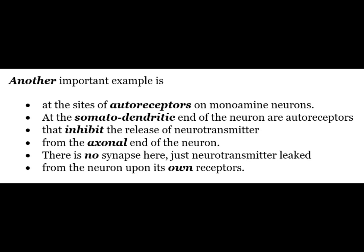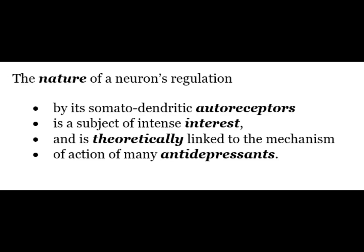Another important example is at the sites of autoreceptors on monoamine neurons. At the somatodendritic end of the neuron are autoreceptors that inhibit the release of neurotransmitter from the exonal end of the neurons. There is no synapse here, but neurotransmitter leaked from the neuron acts upon its own end receptors. The nature of a neuron's regulation by its somatodendritic autoreceptors is theoretically linked to the mechanism of action of many antidepressants.